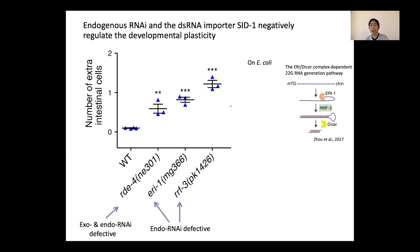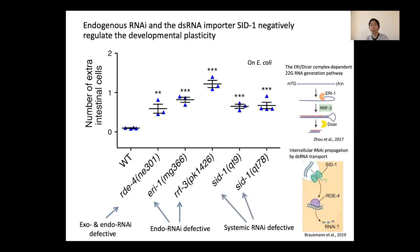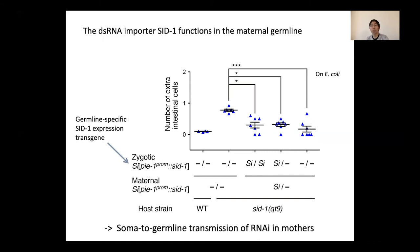RRF4, RRF1, and RRF3 are genes required for endogenous RNAi, and their mutants showed increases in extra intestinal cells even on E. coli. In C. elegans, intercellular transport of double-stranded RNAs occurs due to the propagation of RNAi from cell to cell, a phenomenon called systemic RNAi. Systemic RNAi requires the dsRNA importer SID-1, and mutants of SID-1 also showed increases in extra intestinal cells. The SID-1 mutant phenotype was rescued by germline-specific expression of SID-1, suggesting a role for somato-germline transmission of RNAi, and the maternal action of SID-1 is sufficient.